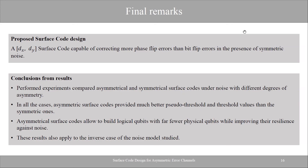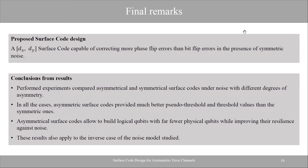To summarize: in all cases where asymmetry was present, our asymmetric codes performed better than the symmetric ones, but when studying only X errors they performed worse even than smaller symmetric codes. This result has to be studied more extensively to model how to choose specific surface code dimensions for a specific noise model on a machine. And there is a sonnet about quantum error correction which summarizes everything up to surface codes that we discussed.